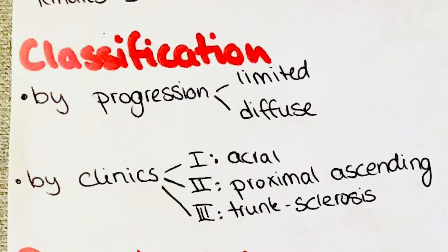There are different types of systemic sclerosis which we differentiate by progression and clinical appearance. Looking at types differing in their progression, we can observe a limited distribution and a diffuse distribution. By clinical appearance we differentiate the acral type affecting the limbs, nose and ears; the proximal ascending type arising from the fingers and climbing up the forearm and arm to the trunk; and the trunk sclerosing type, which is mainly characterized by internal organ involvement and sometimes presents without the pathognomonic skin lesions.